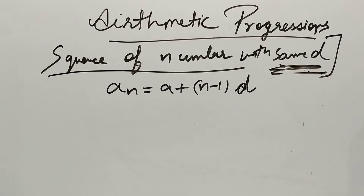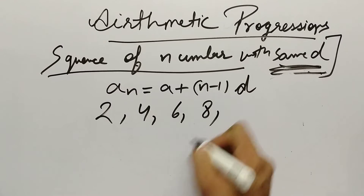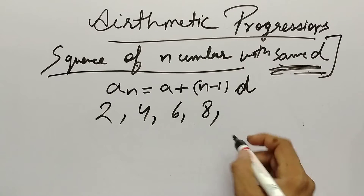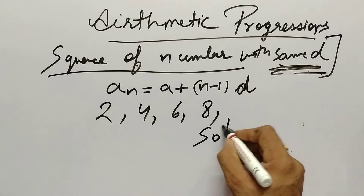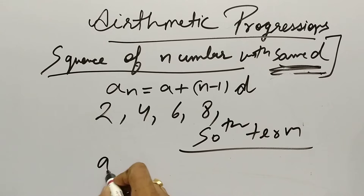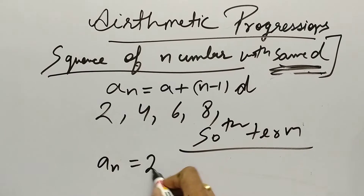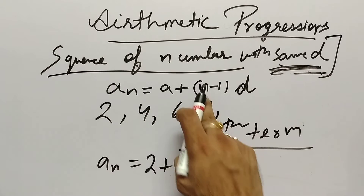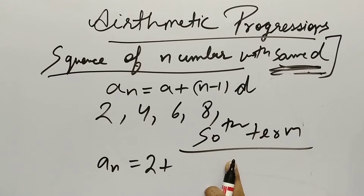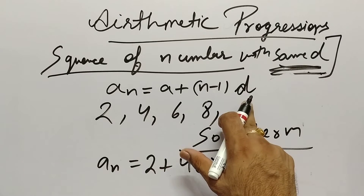Let's put the formula to work. For the sequence 2, 4, 6, 8, I have asked: what will be its 50th term? So simply, aₙ equals a — a becomes 2 — plus n, which becomes 50, minus 1, that is 49, into d.